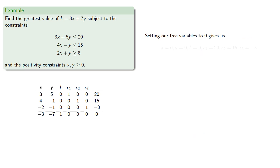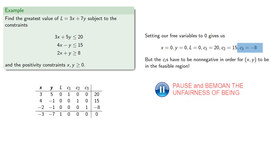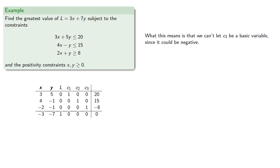Setting our free variables equal to 0 gives us, but remember the ci's have to be non-negative in order for xy to be in the feasible region. This is not a basic feasible solution. What this means is we can't let c3 be a basic variable since it could be negative.